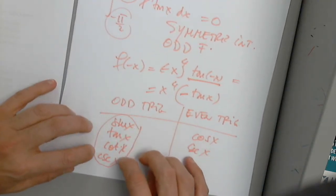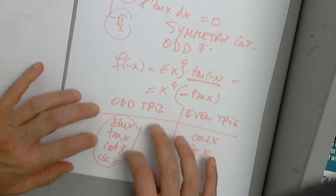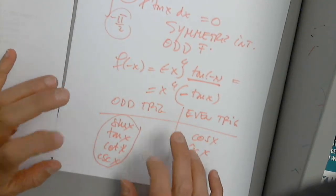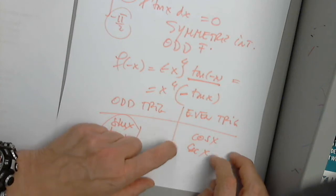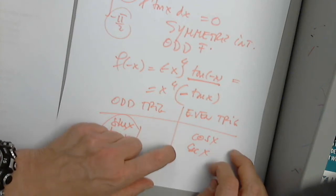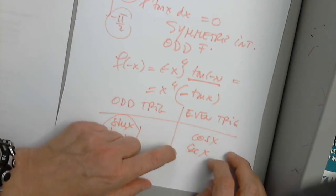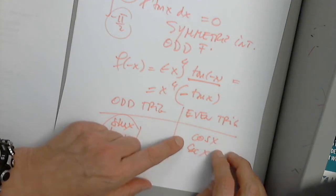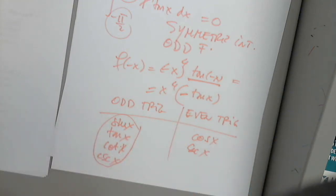Any trig function that has sine in it will always be odd. Any function that has only cosine — like cosine and secant — is an even function.